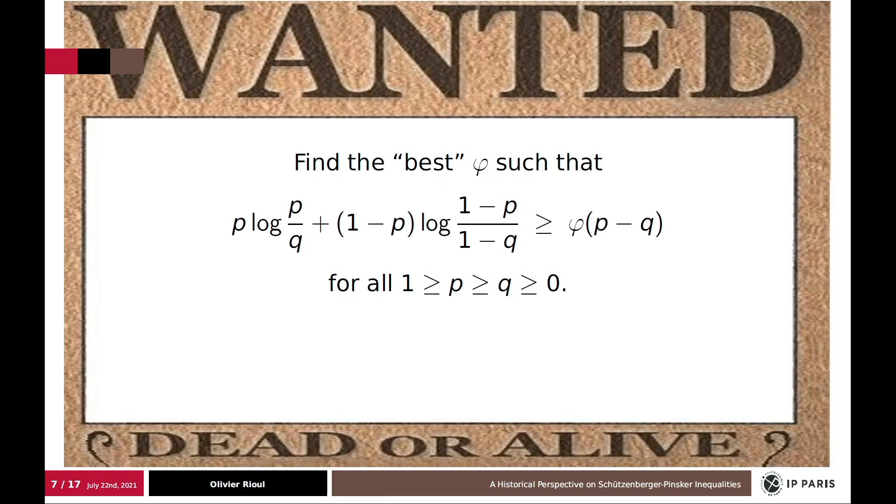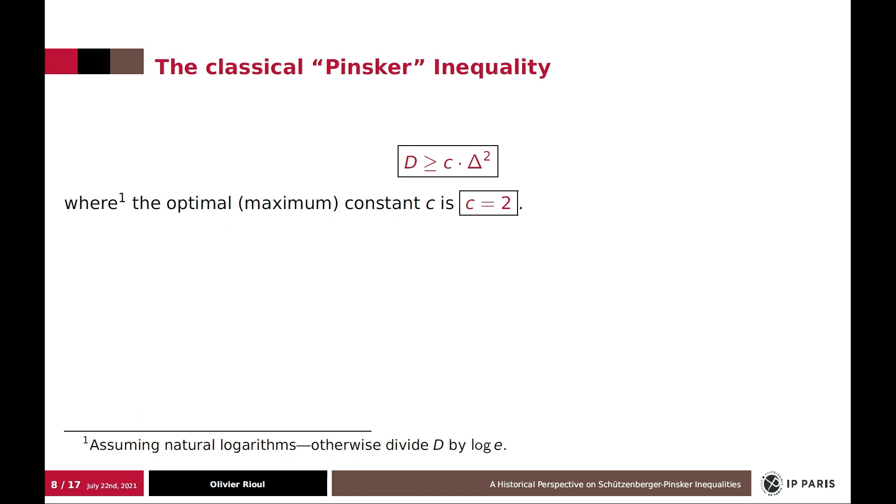To summarize, find the best Pinsker inequality is find the best function phi so that this inequality holds for any parameters p and q between 0 and 1. Which seems like a very simple exercise, but it's not. So I will just make a historical review of this.